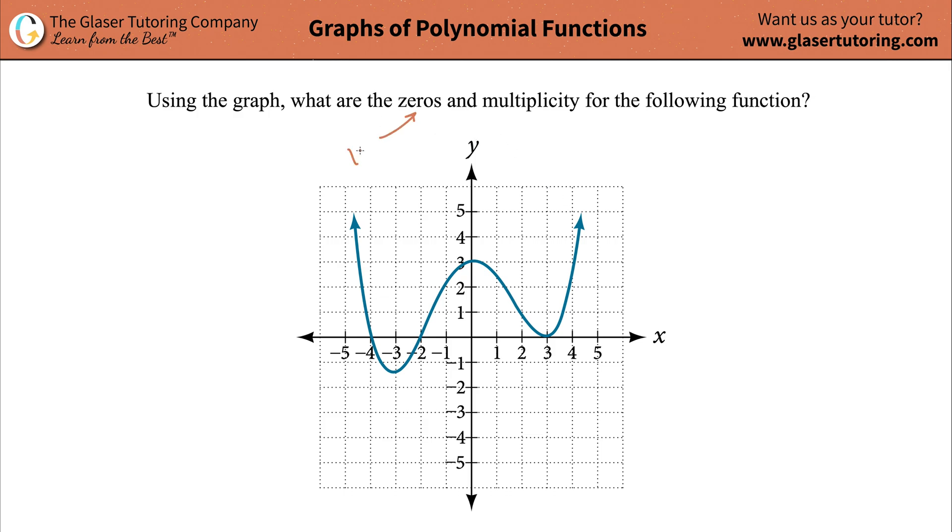So what do they mean by zeros? Well, they just mean x-intercept. Those are basically the zeros of the function. So when you look at this graph, you want to highlight the places where the function crosses or just touches that x-axis.